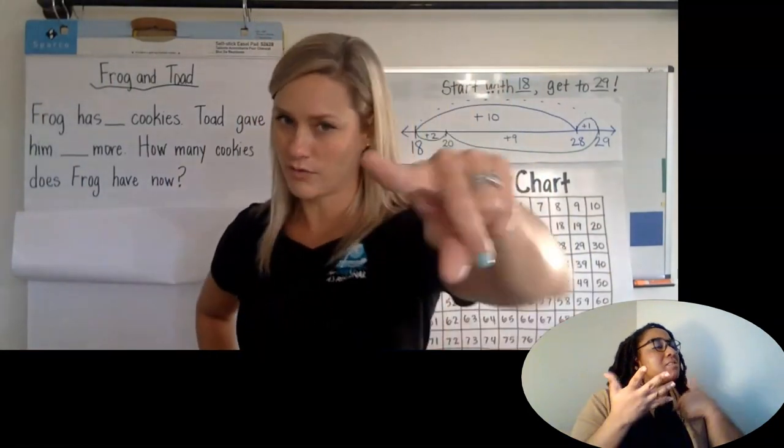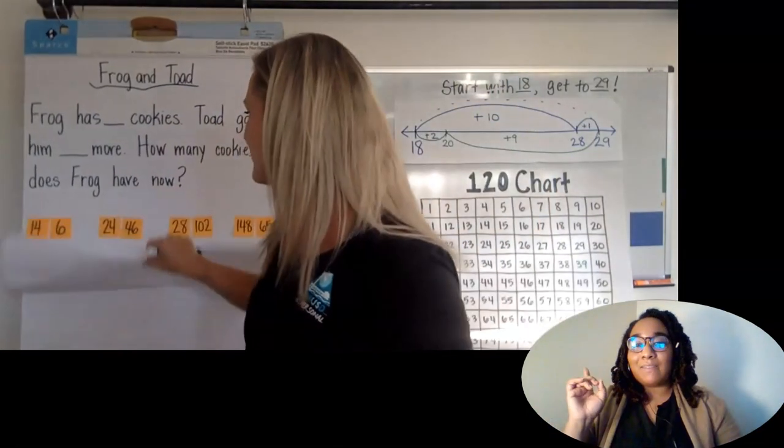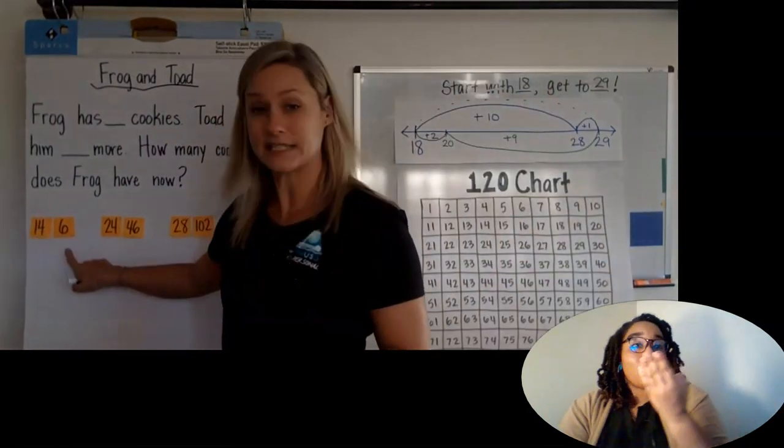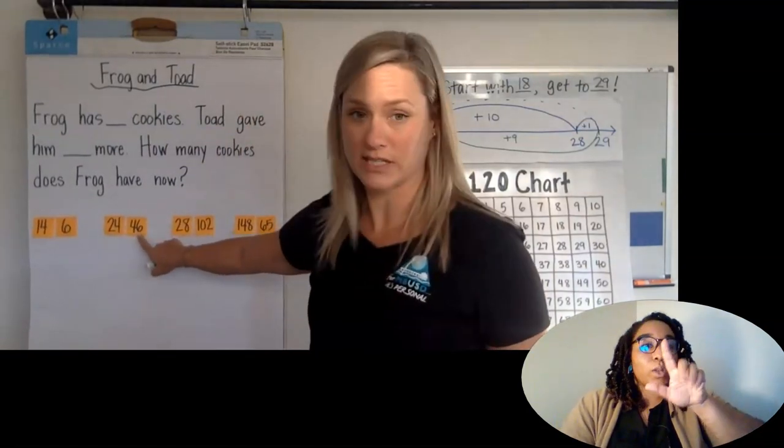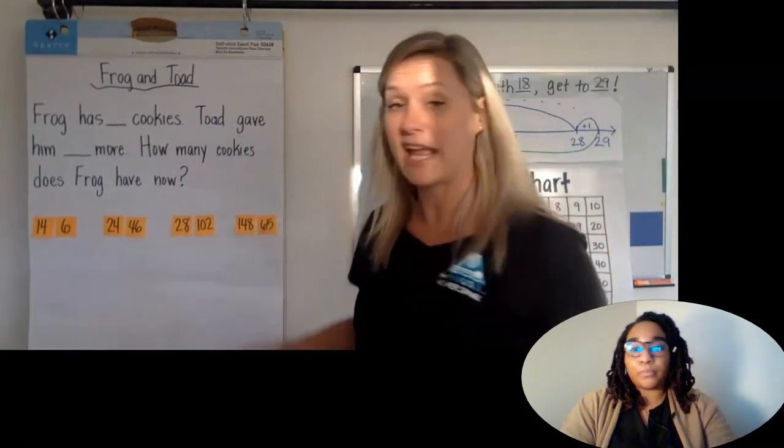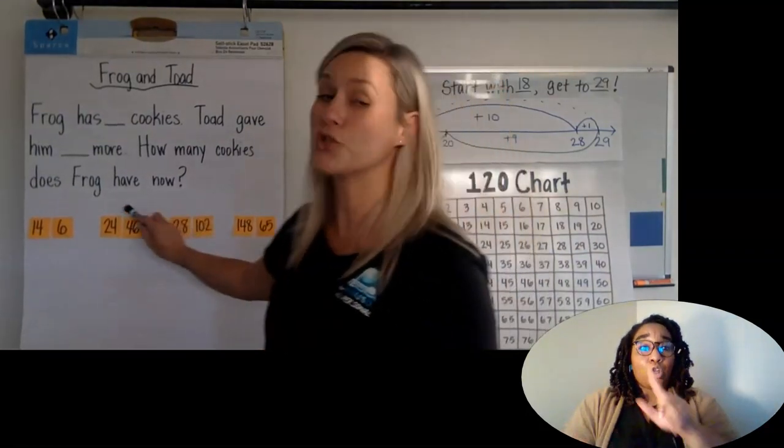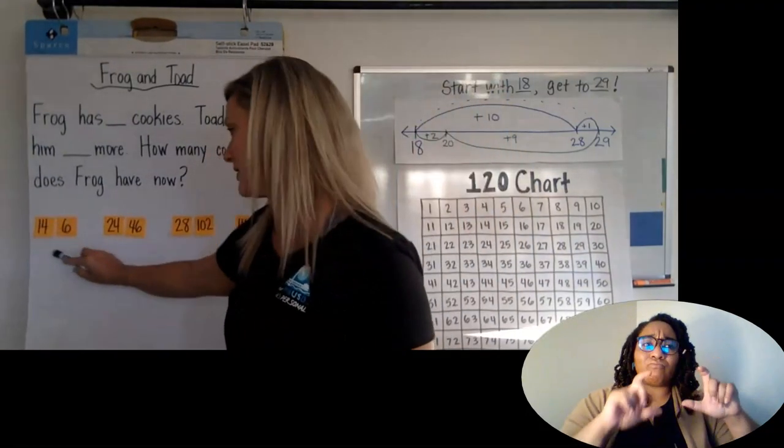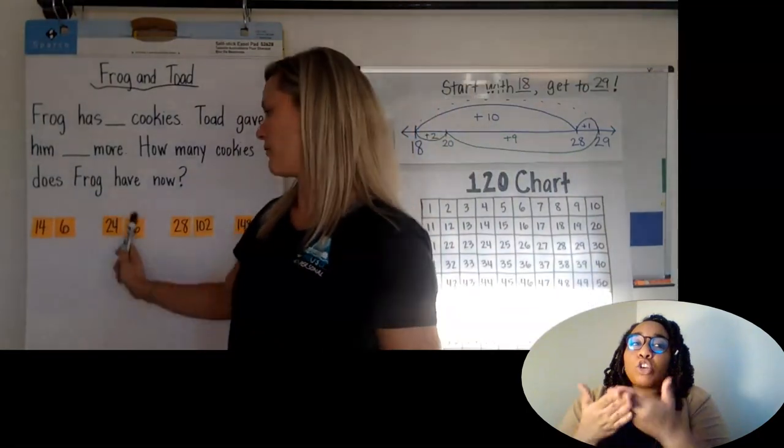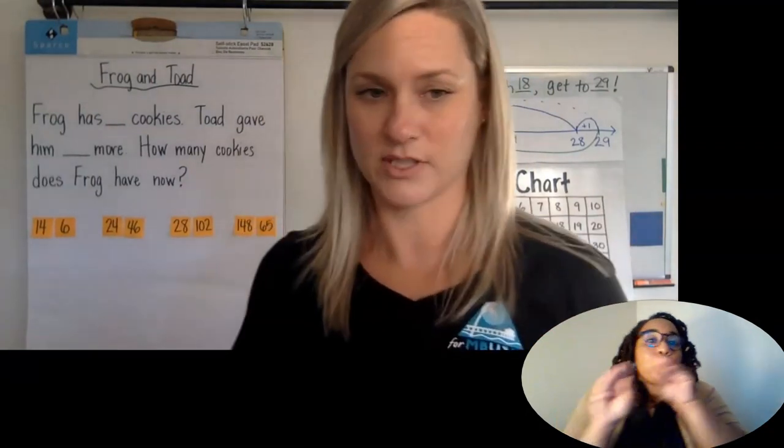Okay. Are you ready for your numbers? Let's see them. This time I don't have a clip. I just have a piece of tape to pull off. Okay. We've got some number sets for you. We have 14 and 6, 24 and 46, 28 and 102, 148 and 65. Okay. You're only in here if you feel like you have super strong, awesome, fantastic strategies for these sets over here, right? Maybe you even try one of these sets first and then you move into the larger sets of numbers, right?